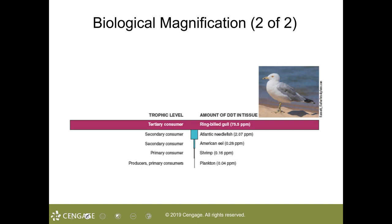DDT also acts as an endocrine disruptor, reducing fertility. In 1962, biologist Carson published Silent Spring, which heightened public awareness about the dangers of DDT and other pesticides. After 1972, DDT was banned in the United States, and the success of many birds gradually improved. The effect of DDT on birds is a result of three characteristics: A, its persistence; B, its bioaccumulation; and C, its biological magnification.